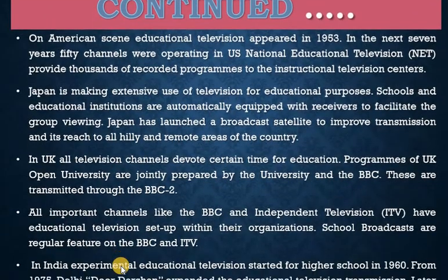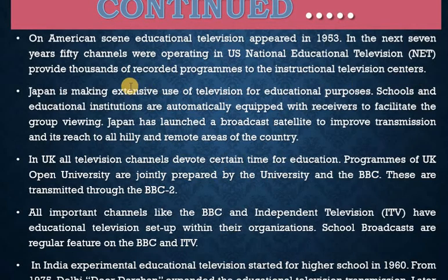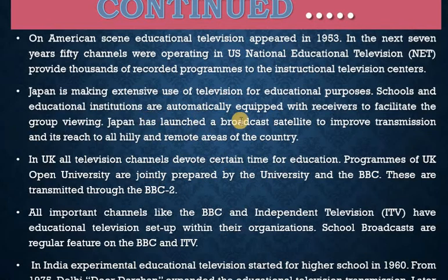On American soil, educational television appeared in 1953. In the next seven years, 50 channels were operating under US National Educational Television (NET). NET provides thousands of recorded programs through institutional television centers. Japan makes extensive use of television for educational purposes. Schools and educational institutions are automatically equipped with receivers to facilitate group viewing. Japan has also launched a broadcast satellite to improve transmission, bringing broadcasts to all hilly and remote areas of the country.